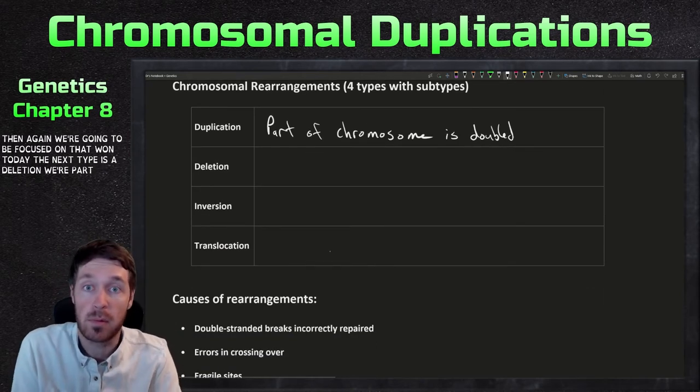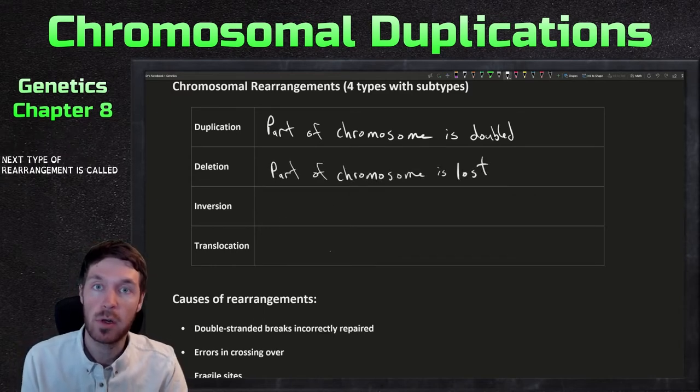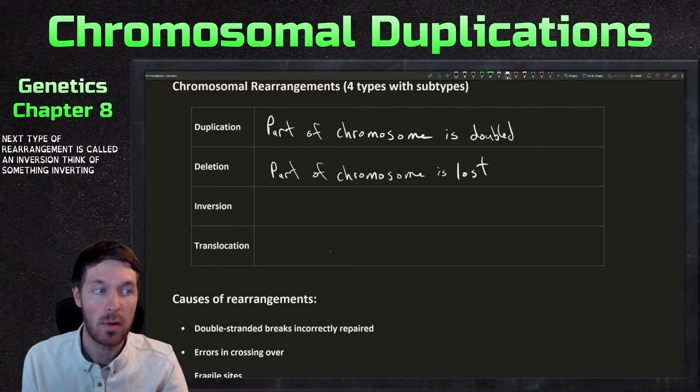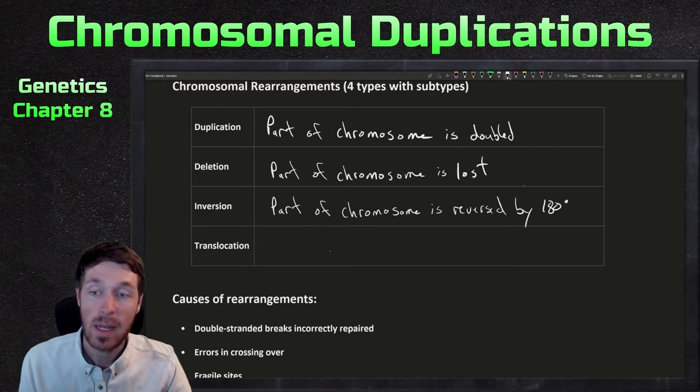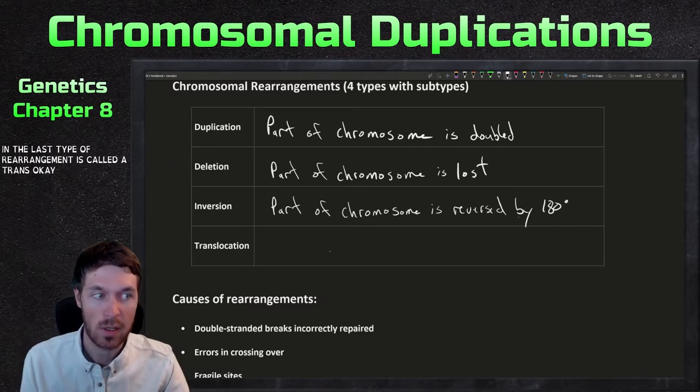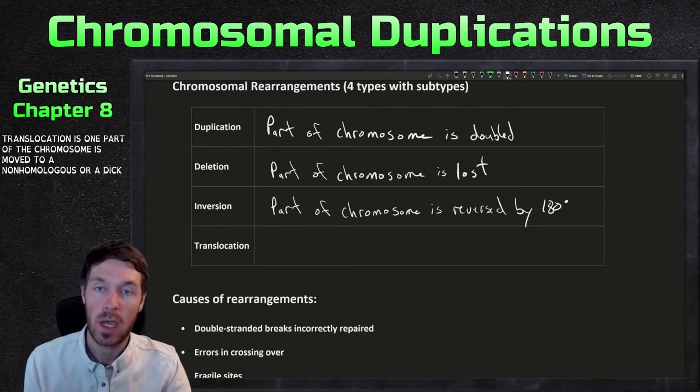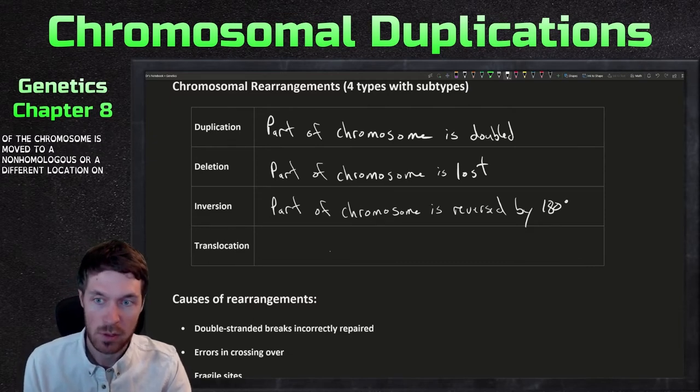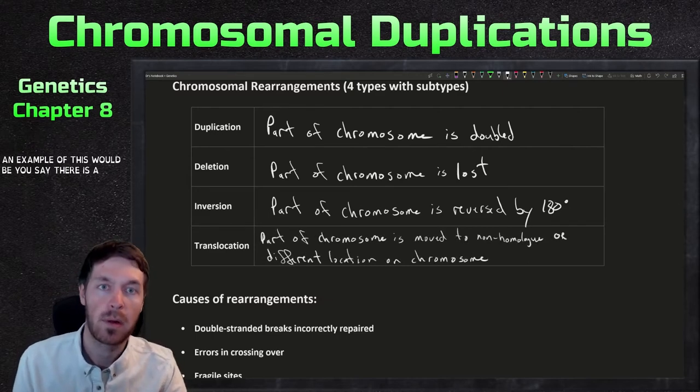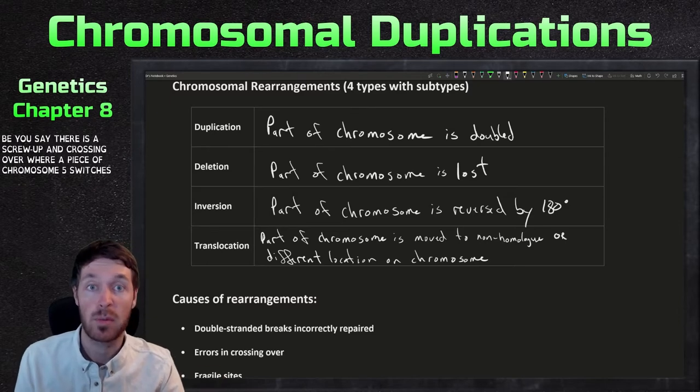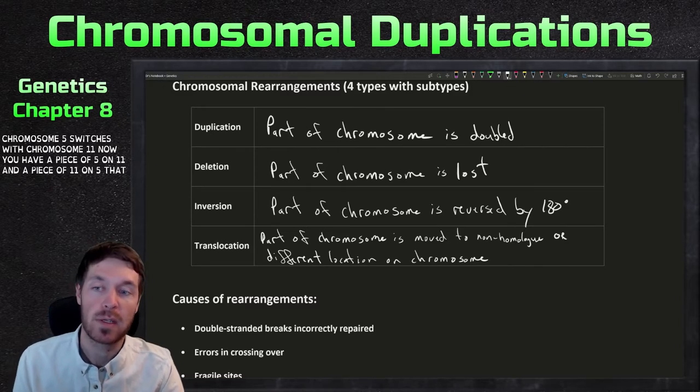The next type is a deletion, where part of the chromosome is deleted or lost. Next type of rearrangement is called an inversion. Think of something inverting, and part of the chromosome is reversed by 180 degrees. And the last type of rearrangement is called a translocation. This is when part of the chromosome is moved to a non-homologous or a different location on the chromosome. An example of this would be, say, there's a screw up in crossing over where a piece of chromosome 5 switches with chromosome 11. Now you have a piece of 5 on 11 and a piece of 11 on 5. That would be a translocation.